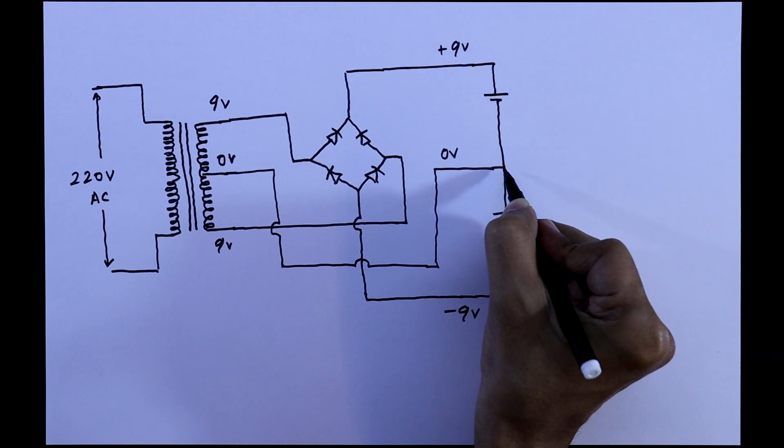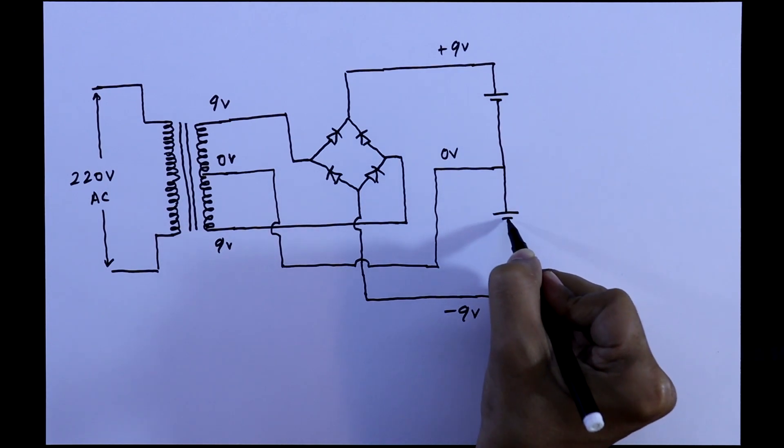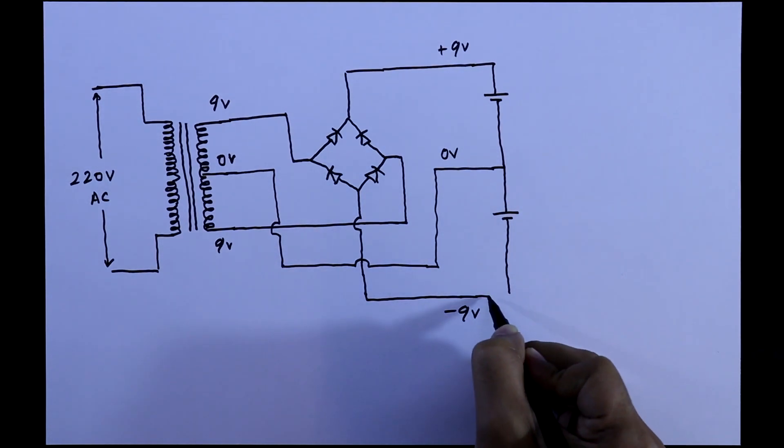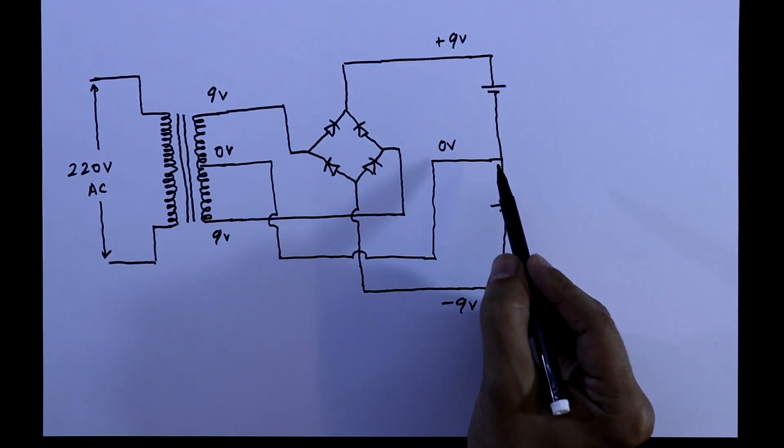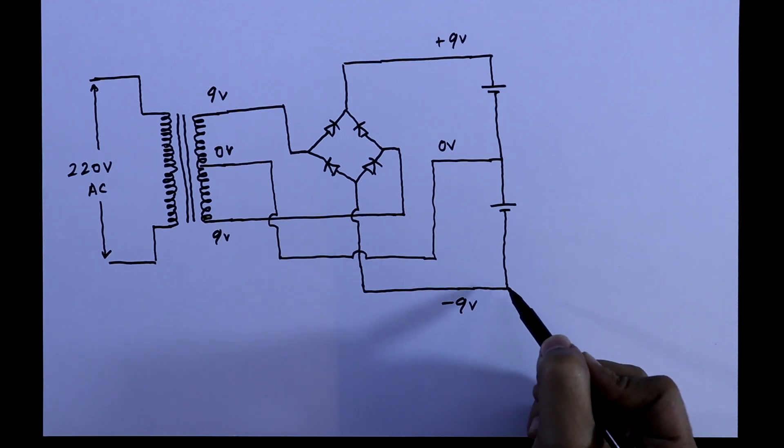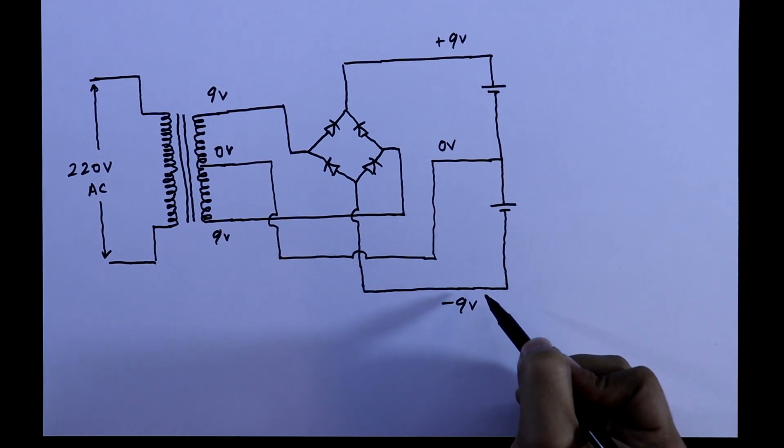But for this capacitor, the positive pin of the capacitor should be connected to the 0 volt and the negative pin should be connected to the minus 9 volt, because this 0 volt is positive with respect to minus 9 volt. It is below 0 volt.